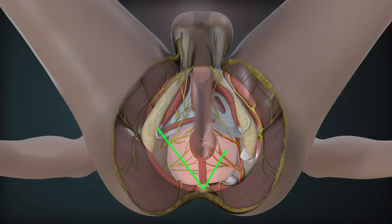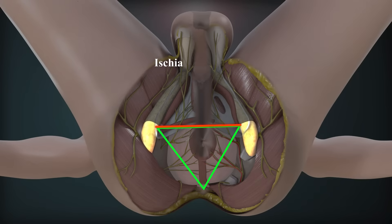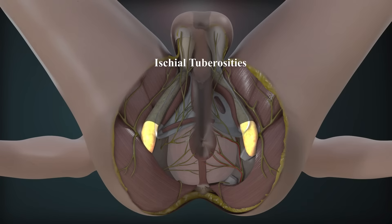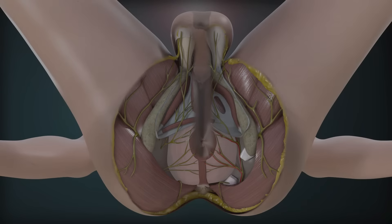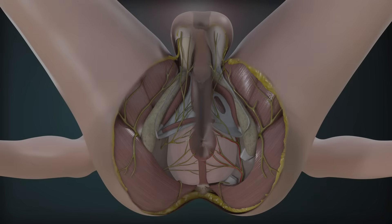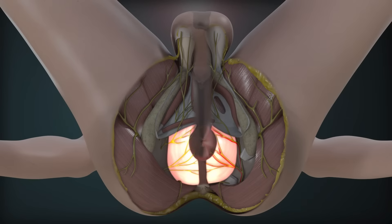It is a triangular area bounded in front by a horizontal line joining the anterior ends of the ischial tuberosities, laterally by the ischial tuberosities, inferolaterally by the sacrotuberous ligaments, and posteriorly by the coccyx. It contains the anal canal in the middle and ischiorectal fossae, one on each side of the anal canal.